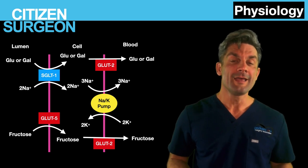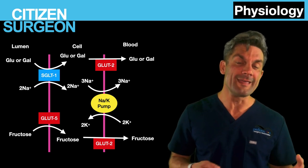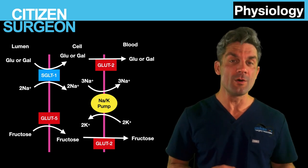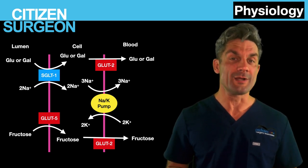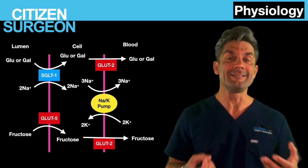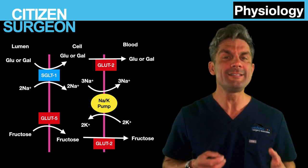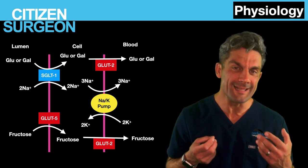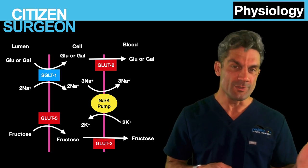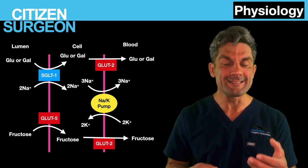Fructose comes through the GLUT5 transporter across the apical membrane between the enterocyte and intestinal lumen. Galactose also uses the SGLT1 transporter — you can treat glucose and galactose essentially the same when it comes to the intestinal enterocyte. On the basolateral membrane, whether it's fructose, glucose, or galactose, the GLUT2 transporter is how glucose leaves the enterocyte and gets into the blood.